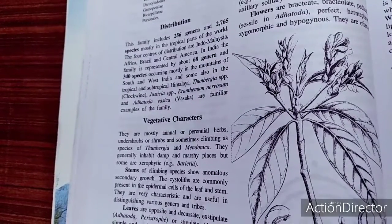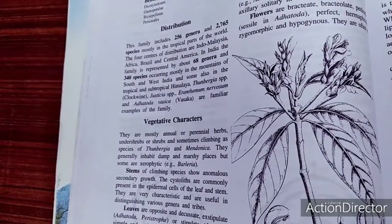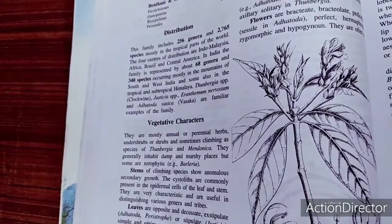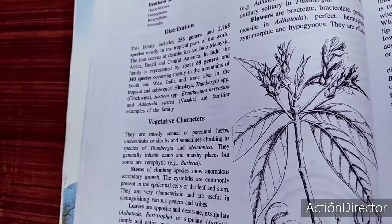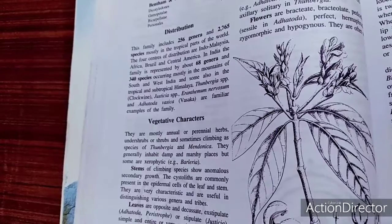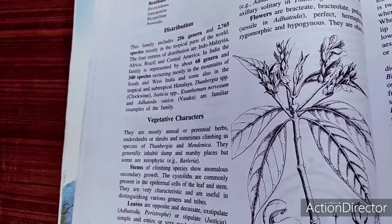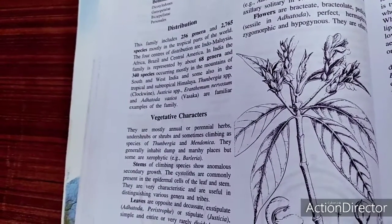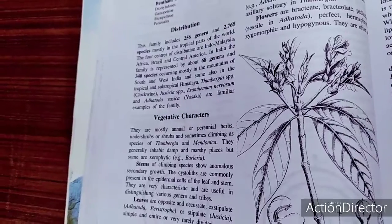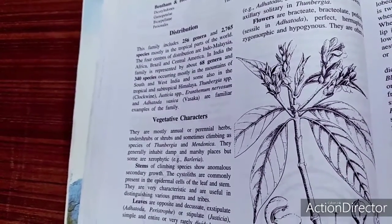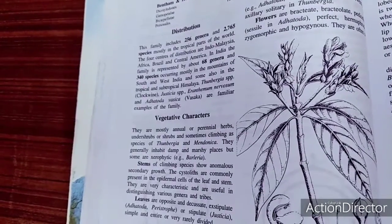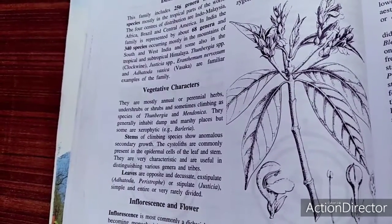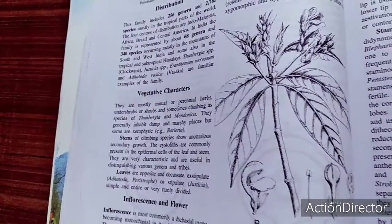The stem shows a didynamous condition — four stamens arranged as two small and two large (2+2). An epipetalous condition is also recognized. The carpel number is two, ovary is superior, and axile placentation is present. The axile placenta is formed by carpel margins folding inwards and fusing at the center. The floral formula is: zygomorphic, hermaphrodite, K5 fused, C5 fused, A2+2 didynamous epipetalous, G2 syncarpous superior.